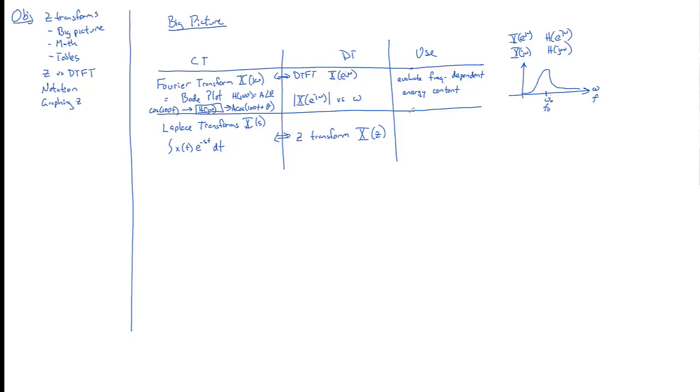So this is a very different use case for the Z transform or the Laplace transform. This is to analytically, it means by hand, using paper, using theories, solve for the output, solve for Y, if you're given the input and the impulse response. And it can also be used to determine BIBO stability.